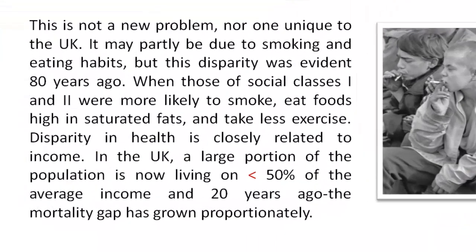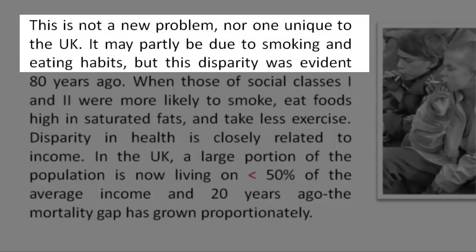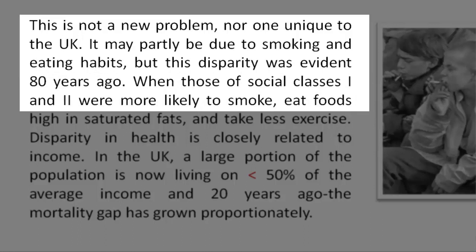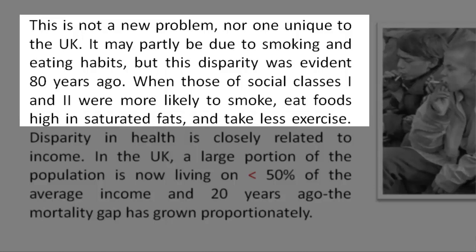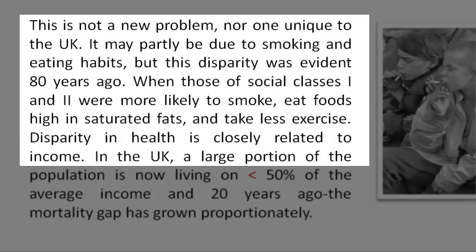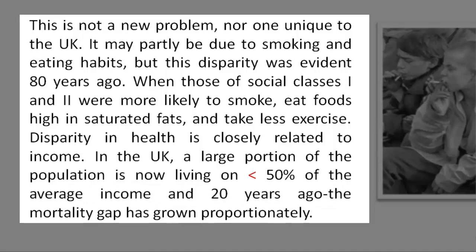This is not a new problem, nor one unique to the UK. It may partly be due to smoking and eating habits, but this disparity was evident 80 years ago, when those of social classes 1 and 2 were more likely to smoke, eat foods high in saturated fats, and take less exercise. Disparity in health is closely related to income. In the UK, a large portion of the population is now living on less than 50% of the average income, and over the past 20 years the mortality gap has grown proportionately.